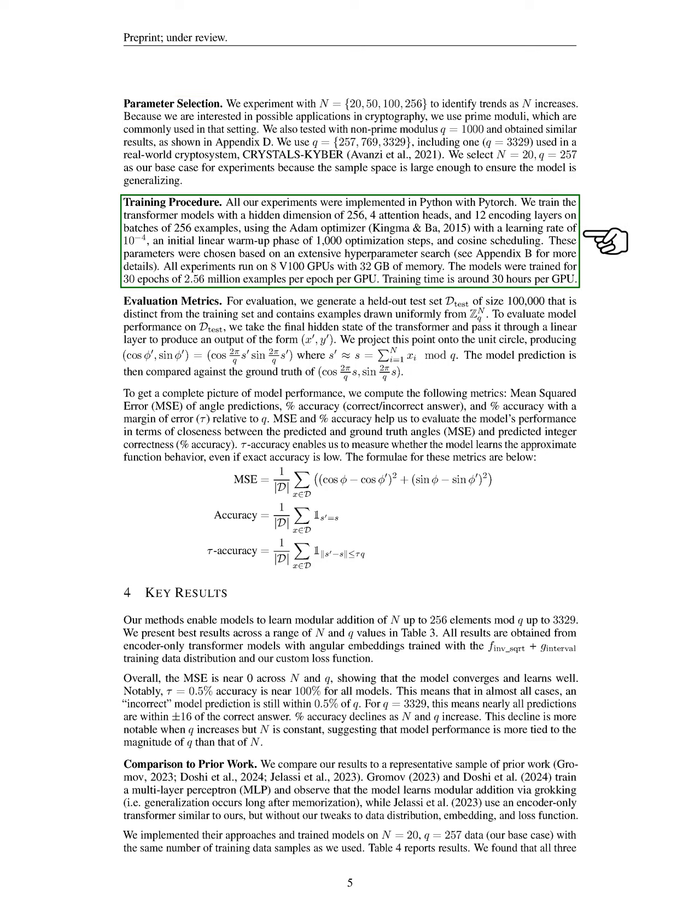For the training procedure, we conduct all experiments using Python and PyTorch. We train transformer models with a hidden dimension of 256, four attention heads, and 12 encoding layers on batches of 256 examples. We utilize the Adam optimizer with a learning rate of 0.0001, an initial warm-up phase of 1000 optimization steps, and cosine scheduling. These parameters were determined through extensive hyperparameter searches, as noted in the appendix.